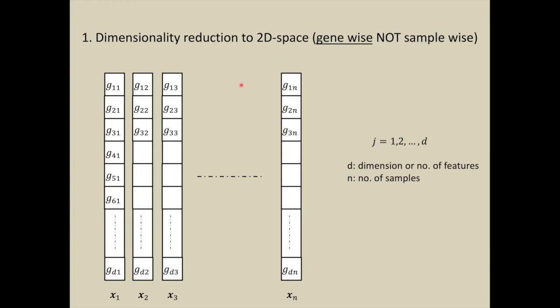Let us see the transformation to 2D space. If you consider samples - x1 is a sample, x2 is a sample up to xn - we have n samples, and each sample has d dimensions or d number of features.